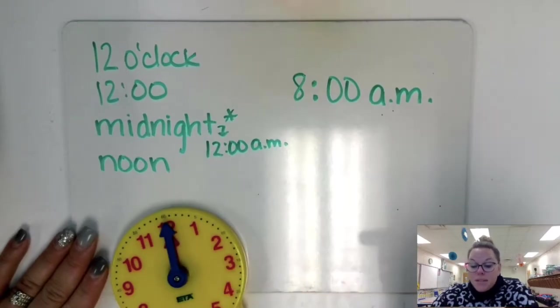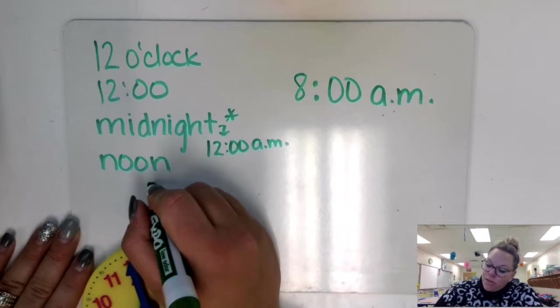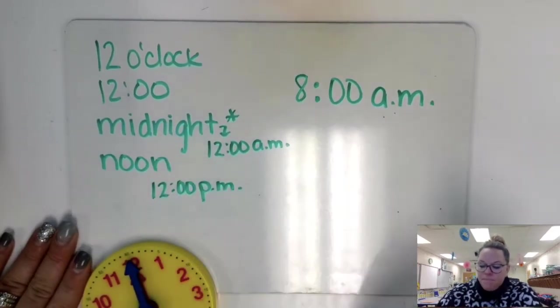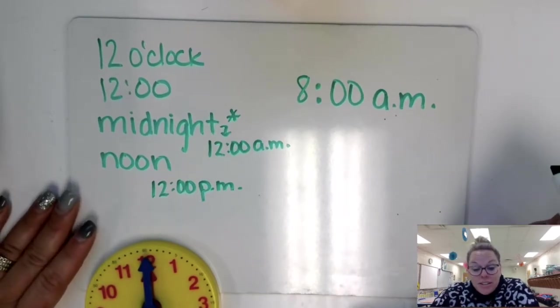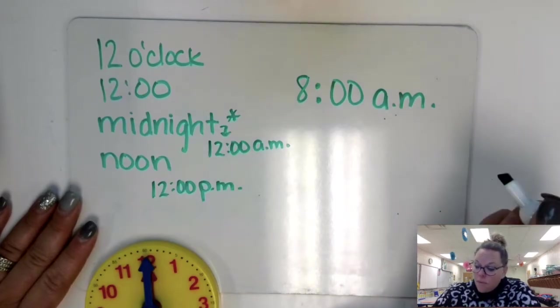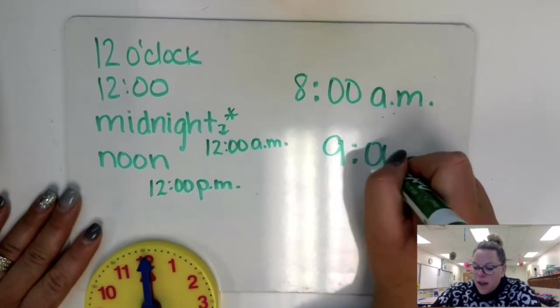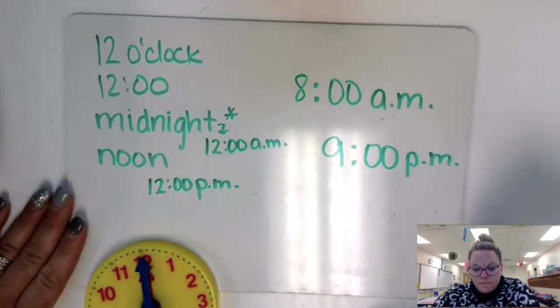The p.m. time begins at noon. So noon, we say is 12 o'clock p.m. That's noon. Many children go to bed at nine o'clock at night. If we want to say nine o'clock at night, we're going to say nine o'clock p.m.